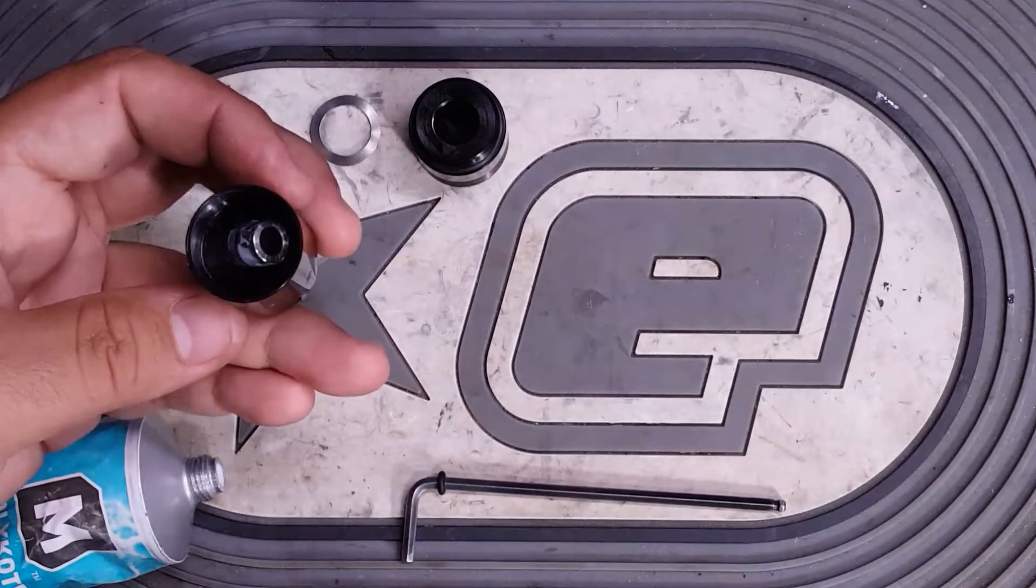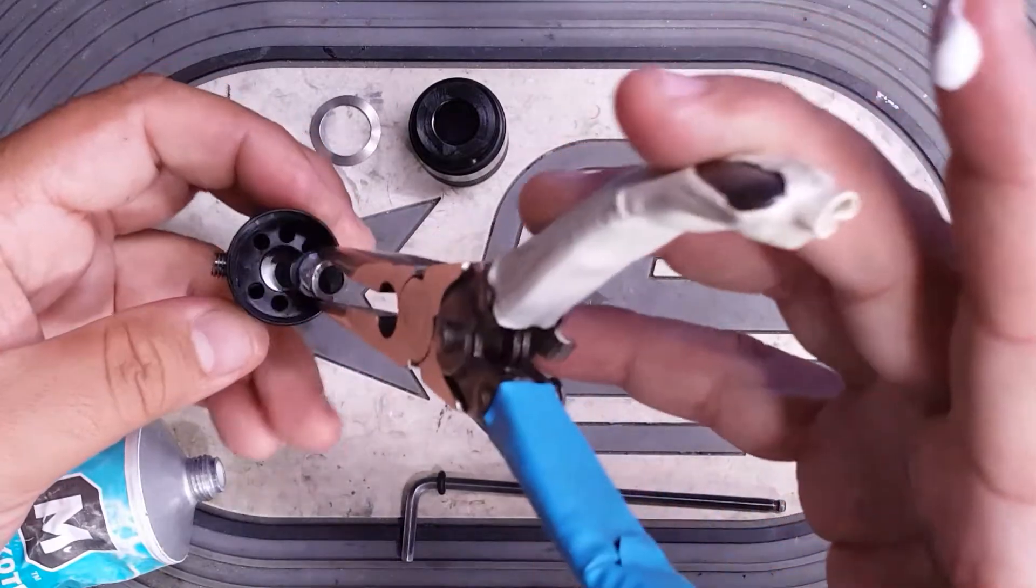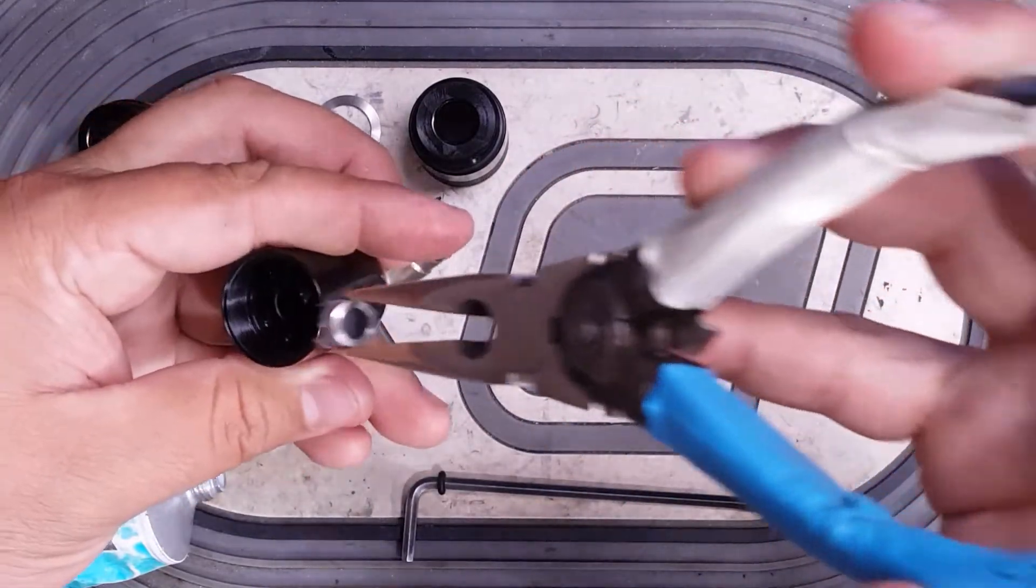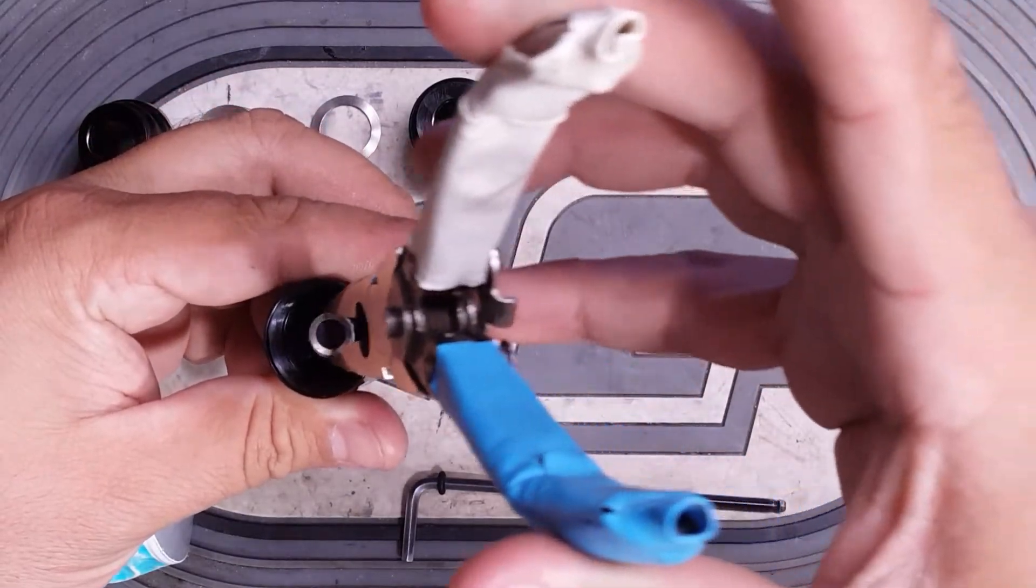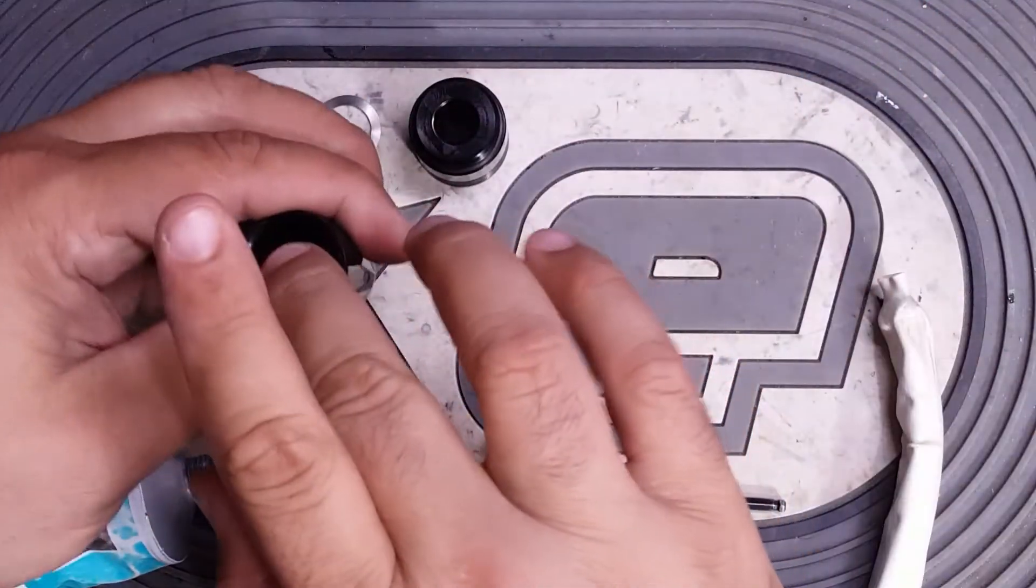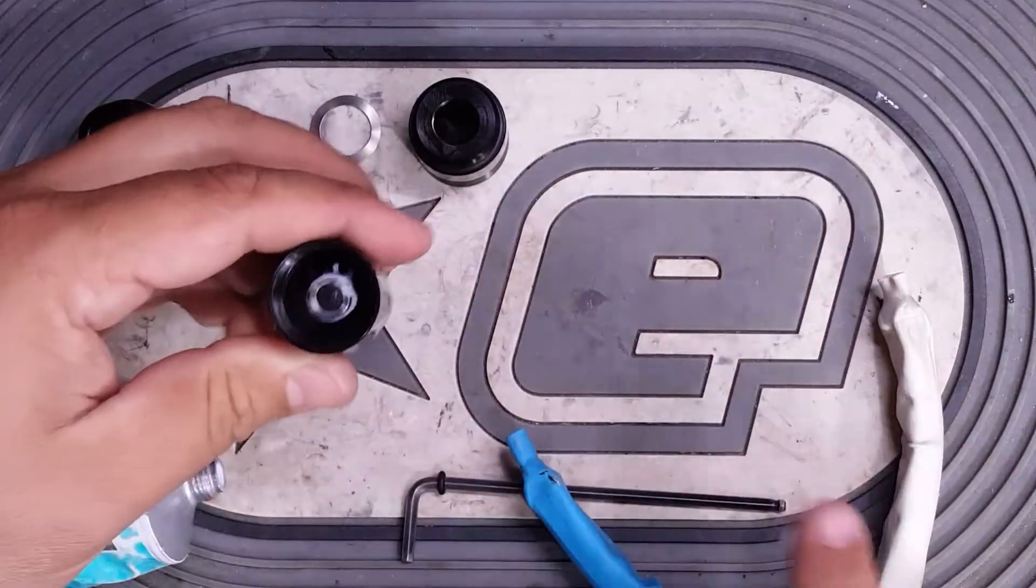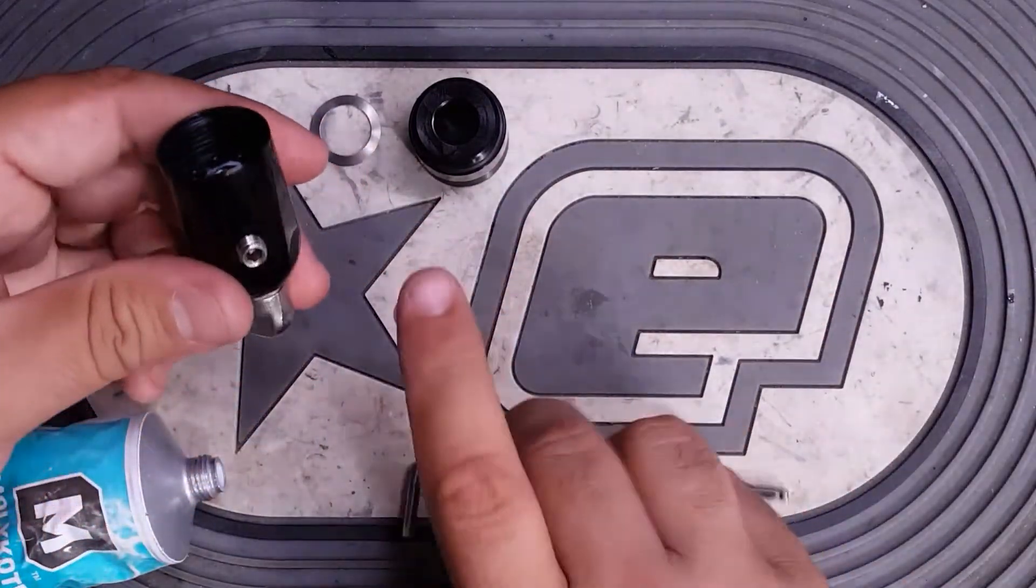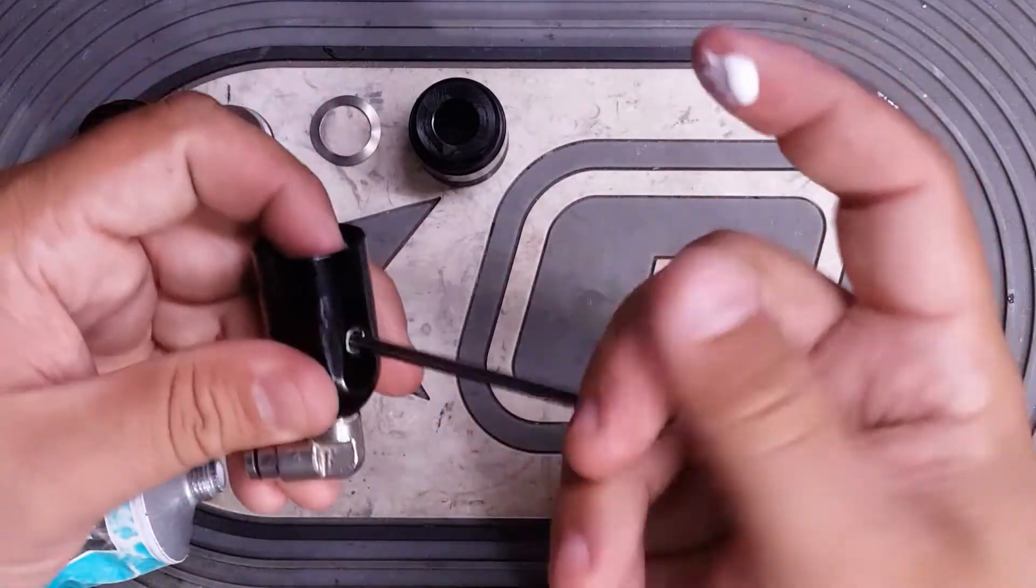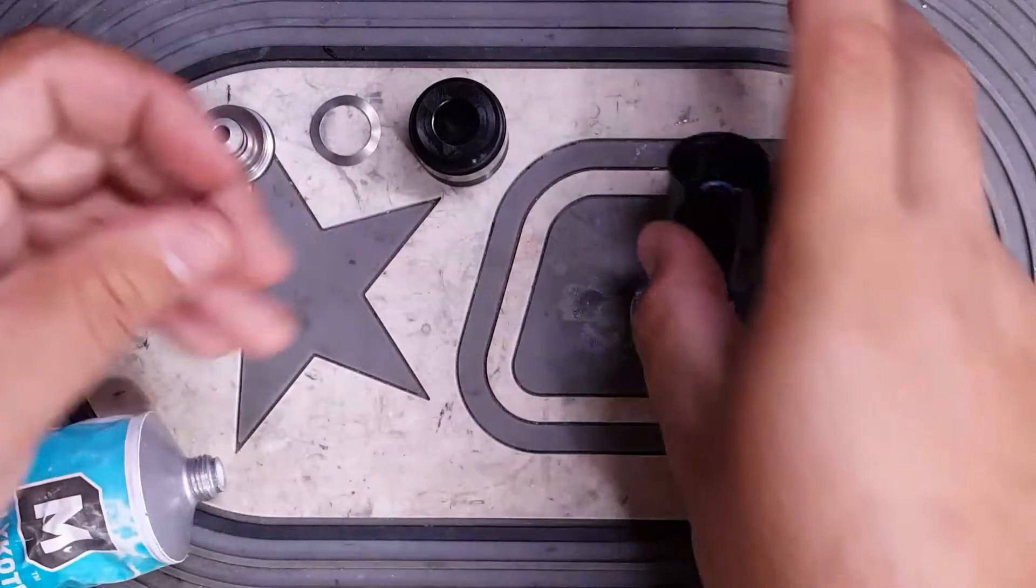Actually, easiest way to line everything up is just to grab a set of needle-nose pliers, hold it in the orientation you want, just drop it down and push it in place. There we go. Then you can put the adjustment screw in. That will move this up slightly.